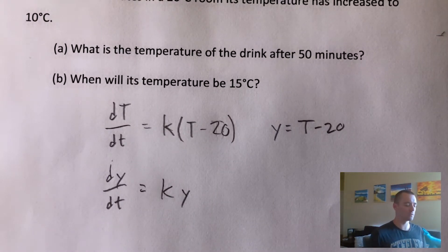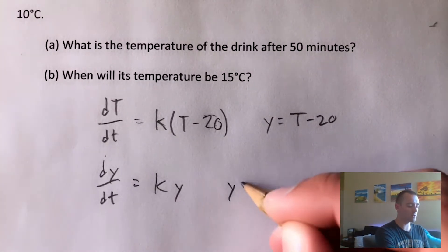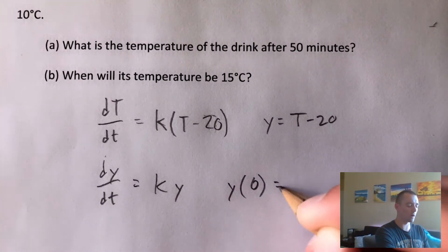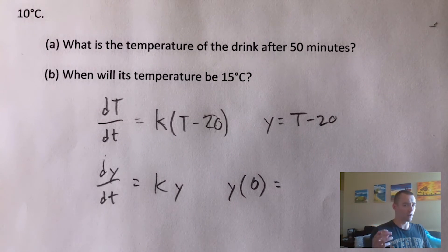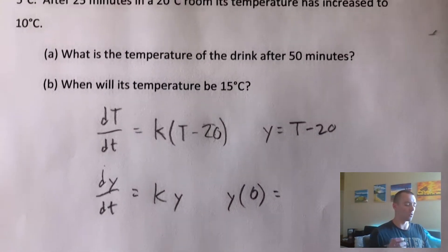So now what we also need to figure out is what y is when t is zero. So basically y of zero. In other words, our initial condition.